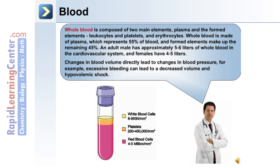Changes in blood volume directly lead to changes in blood pressure. Excessive bleeding, for example, can lead to a decreased volume, and in some cases, hypovolemic shock.